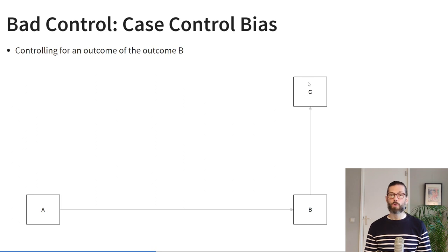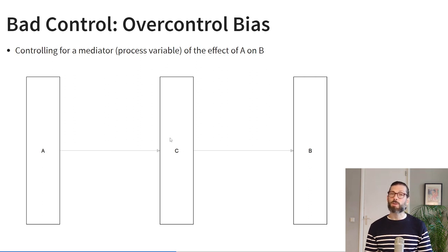Another example of a bad control is if you control for an outcome of the outcome B — variable C is caused by B, not by A, and it doesn't make sense to control for it. A third bad control is over-control bias, where C is a mediator of the effect of A on B. A mediator is a process variable explaining why A has an effect on B. If you control for C, much of the effect of A will be explained away, and you'll underestimate the effect of A on B. Sometimes this is exactly what you want — to demonstrate mediation — but if you just want the effect of A on B, controlling for a mediator will lead you to underestimate it.